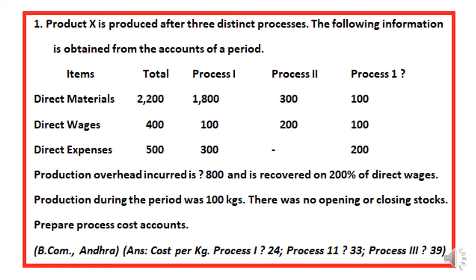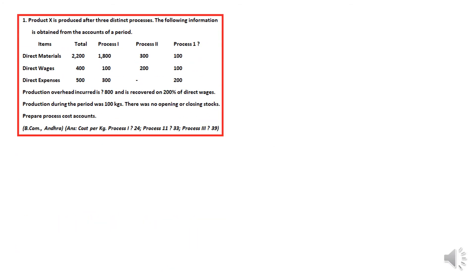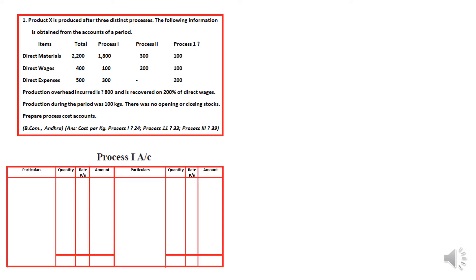Unless anything contradictory is specifically mentioned, we will always use the direct wages ratio for apportioning overheads. The production during the period was 100 kg and there was no opening and closing stock. We need to prepare process cost accounts. The format of a process account is similar to a ledger account with columns for particulars, units (quantity), rate per unit, and amount — on both the debit and credit sides.